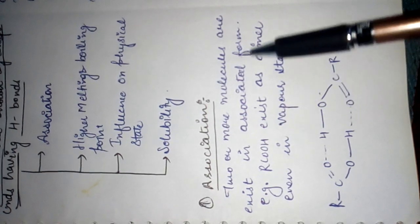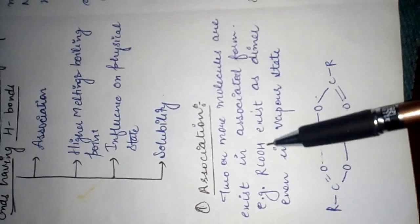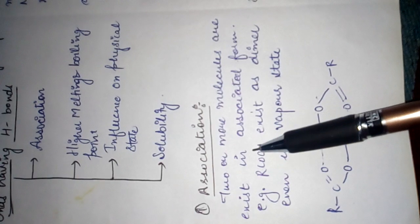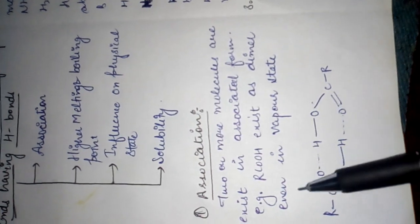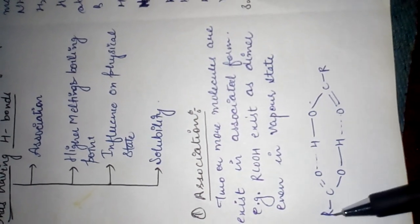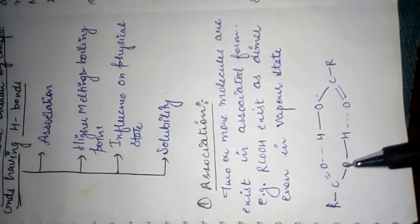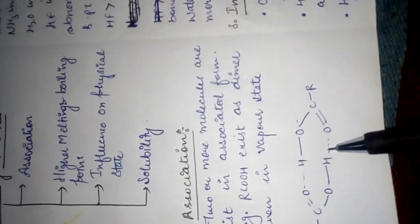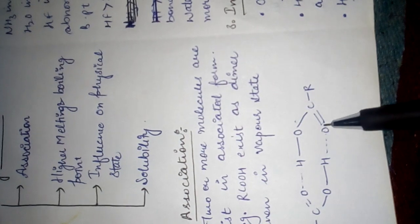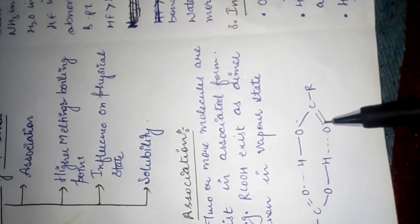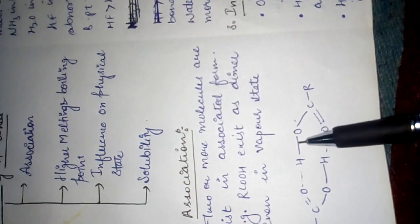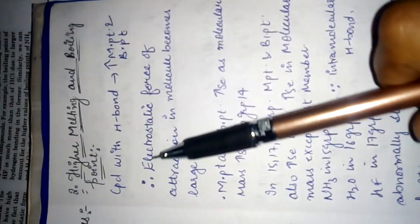For example, carboxylic acid exists as a dimer even in the vapor state. The carbonyl oxygen and O-H form a hydrogen bond with the oxygen atom of another molecule of carboxylic acid, and it exists in dimer form.